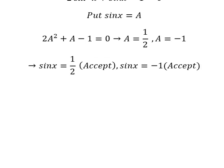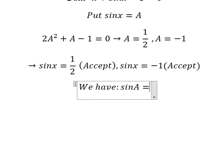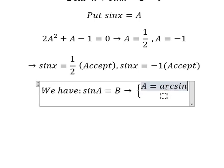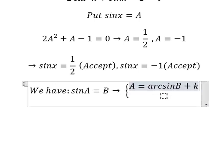Now we have the formula here. If we have sin(A) equals B, then we have A equals arcsin(B) plus k times 2π, where k belongs to the integers.